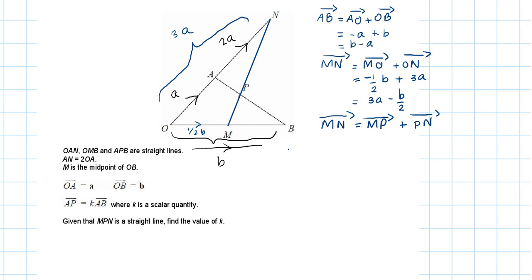MP can be found by going on this journey: MO plus OA plus AP. Now the question tells us what AP is—it's K times AB, which means it will be K times B minus A, which we found earlier. So MP is minus B over 2 plus A plus K times B minus A.